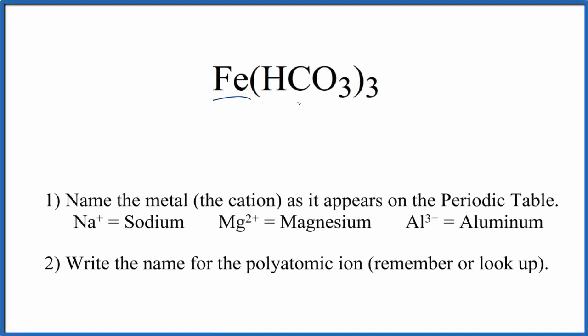To write the name for Fe(HCO3)3, we first need to recognize that we have iron here. It's a transition metal. And then we have this polyatomic ion, a group of non-metals. We have three of them.